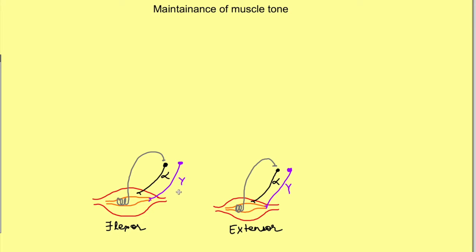The ends of the intrafusal muscle fiber are supplied by gamma motor neurons, and these ends are contractile. When there is excitation of the gamma motor neuron, there is contraction at the ends of the intrafusal fibers, causing the intrafusal fiber to stretch. Because of this stretching, there are increased impulses from the ascending fibers — 1a and 2 — which go and excite the alpha motor neuron. This is the basic stretch reflex: the connection between sensory fibers and the alpha motor neuron.